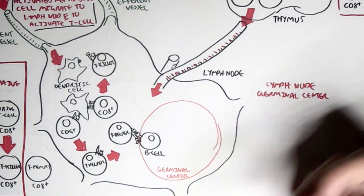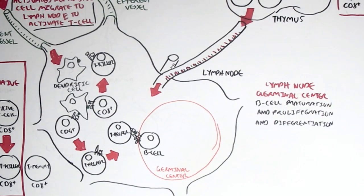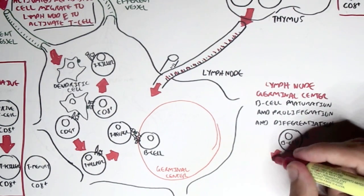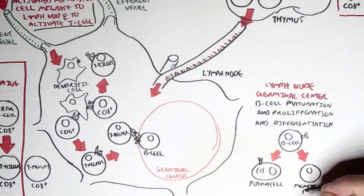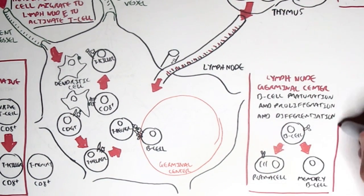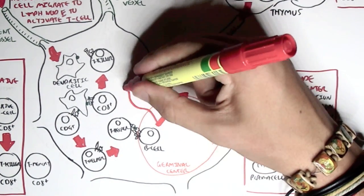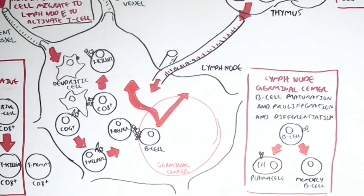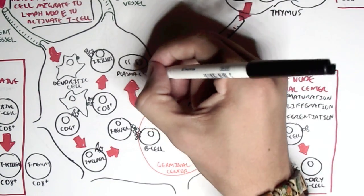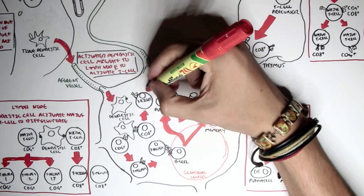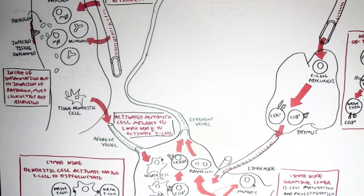In this video we're going to concentrate on B cell activation and differentiation. In the lymph node germinal center, the B cells mature, proliferate, and differentiate. If a B cell is activated and fully differentiated, it will become either a plasma cell or a memory B cell. The plasma cell is the antibody-secreting cell. So the B cell becomes memory cells and plasma cells, and all these T cells and plasma cells travel out of the lymph node via the efferent lymphatic vessel.